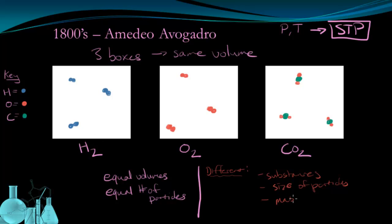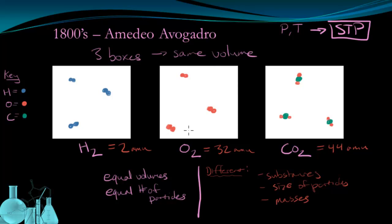Lastly, the masses are different. Each molecule of hydrogen gas is 2 AMU. Each molecule of oxygen gas is 32 AMU. And each molecule of carbon dioxide is 44 AMU. So the total mass of each box is different. This mass component is important, because that's what Avogadro was actually looking at — the relationship between the masses of different gases of the same volume.